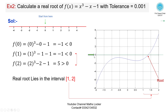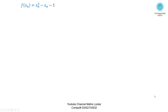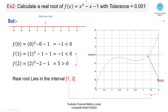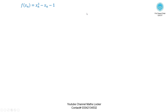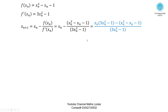Here is a MATLAB graph of the function confirming the root lies in [1, 2]. With f(xₙ) = xₙ³ - xₙ - 1 and f'(xₙ) = 3xₙ² - 1, substituting into the Newton-Raphson formula and simplifying gives: xₙ₊₁ = (2xₙ³ + 1) / (3xₙ² - 1).